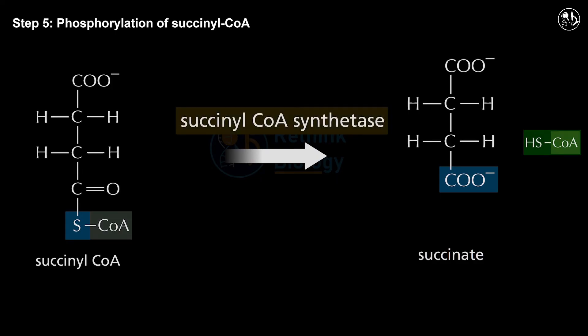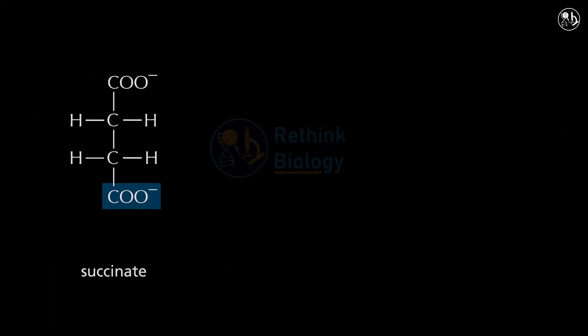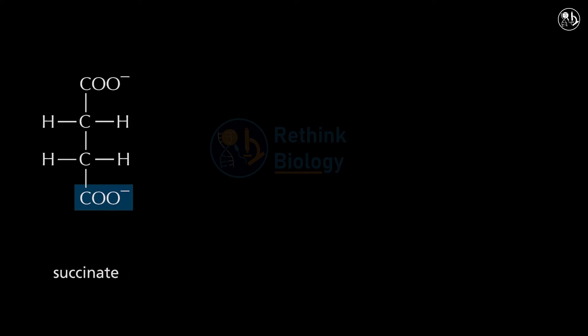Step 5: Phosphorylation of succinyl-CoA. In this step, succinyl-CoA is converted into succinate. This reaction is catalyzed by the enzyme succinyl-CoA synthetase and transfers a phosphate group to GDP to form GTP. This is the only step in the citric acid cycle that directly produces ATP or GTP.